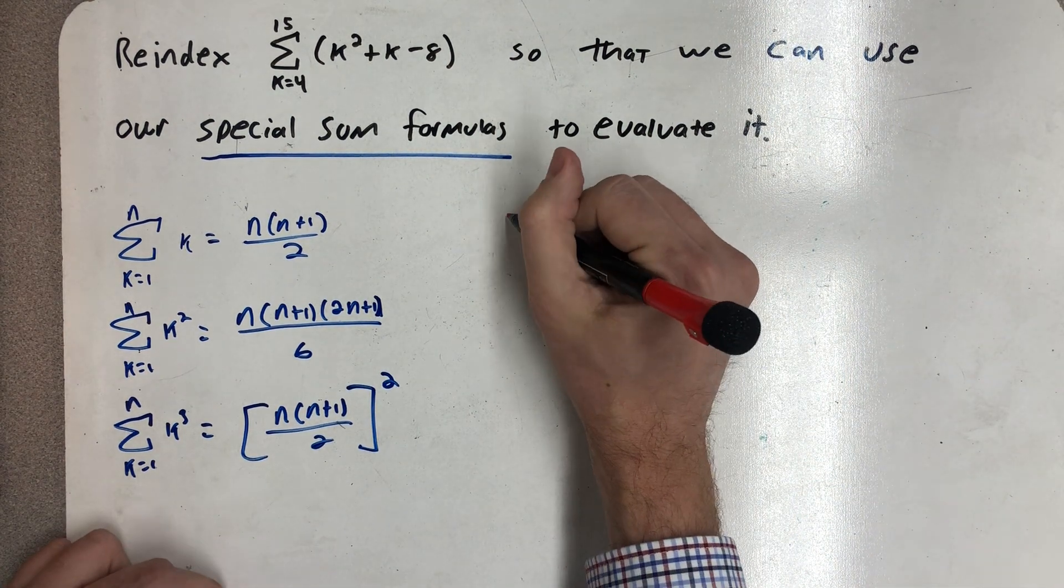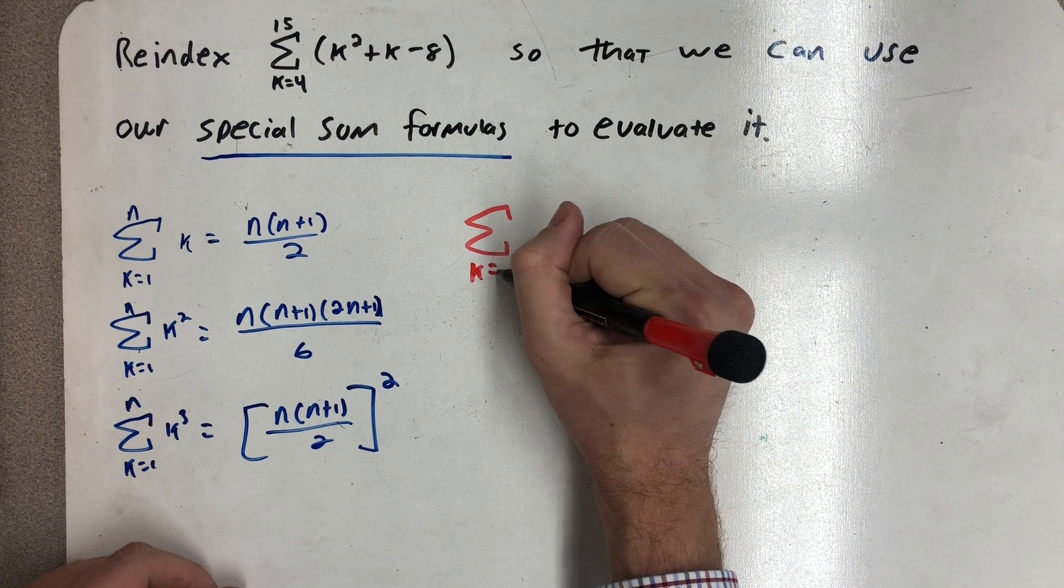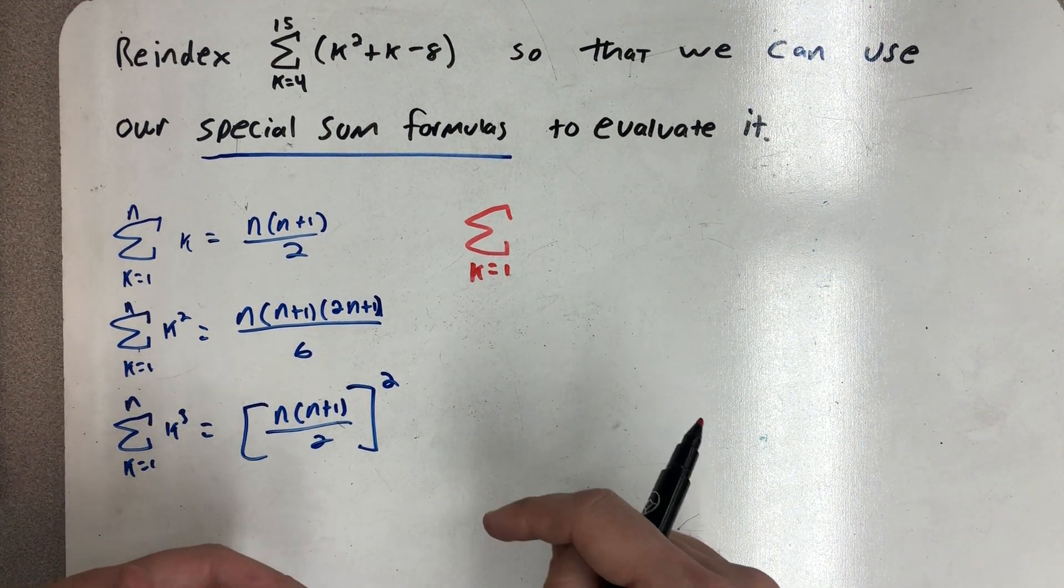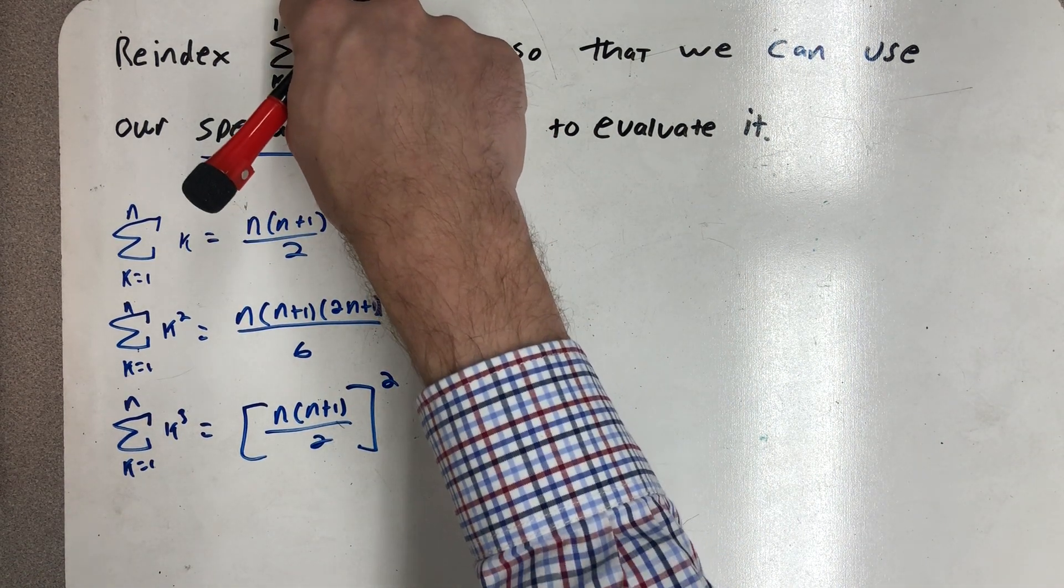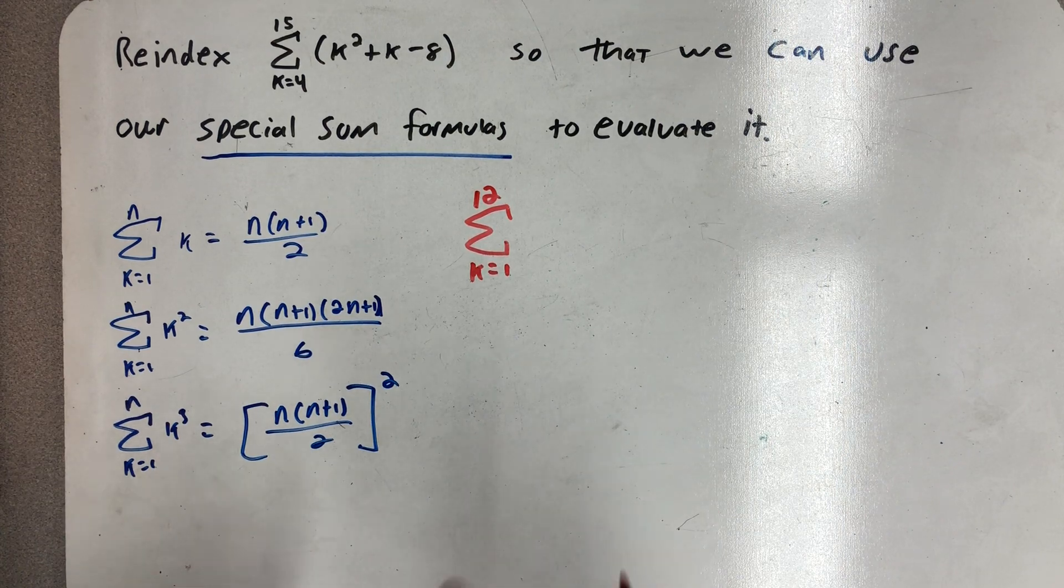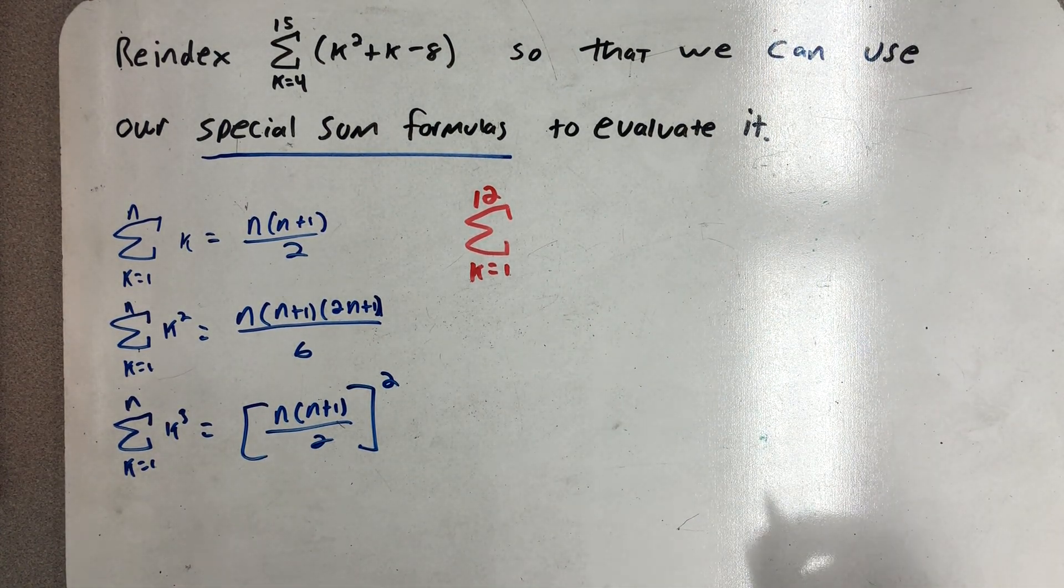We can think about doing this two different ways. I need this to start at k equals 1 rather than 4, but I need to have the same number of terms. 15 minus 4 is 11, so I need this to go from 1 to 12, so I have 12 things in my sum.